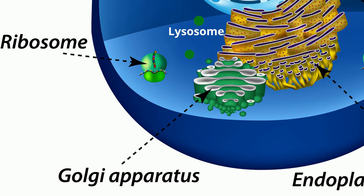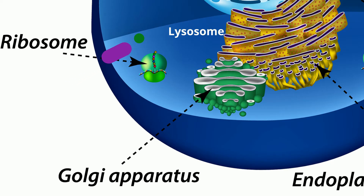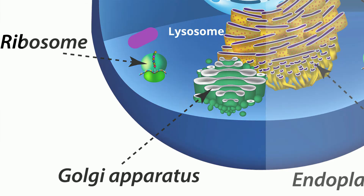Lysosomes are found floating in the cytoplasm. When materials are brought into the cell, lysosomes can attach to these objects and begin to break them down. Since lysosomes are little digestive machines, they go to work when the cell absorbs or eats some food.